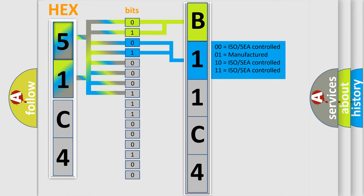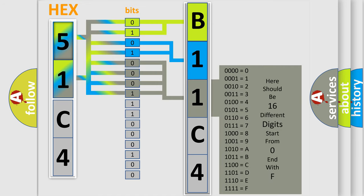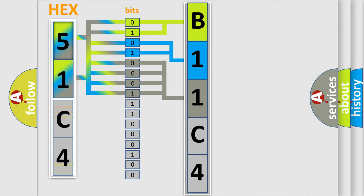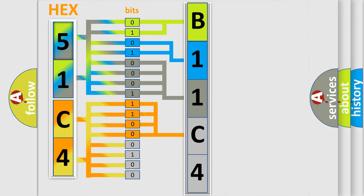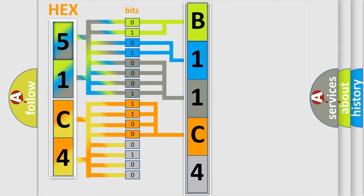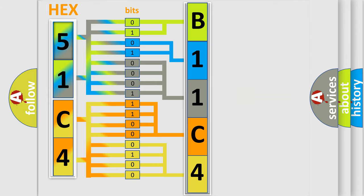The last four bits of the first byte define the third character of the code. The second byte is composed of a combination of eight bits. The first four bits determine the fourth character of the code, and the combination of the last four bits defines the fifth character. A single byte conceals 256 possible combinations.